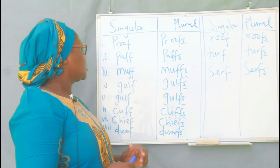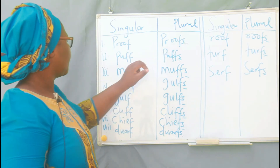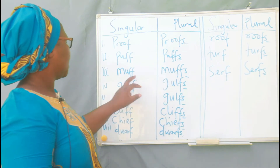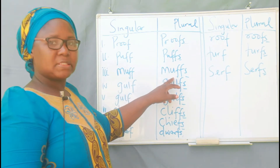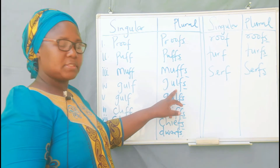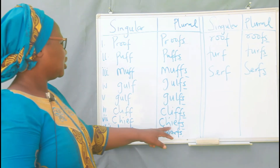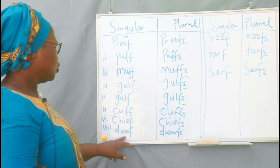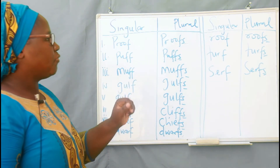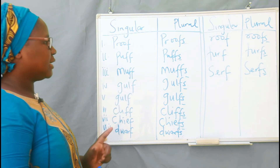These examples include: proof/proofs, puff/puffs, muff/muffs, golf/golfs, cleave/cleaves, chief/chiefs, dwarf/dwarves, roof/roofs, tough/toughs, and self/selves.